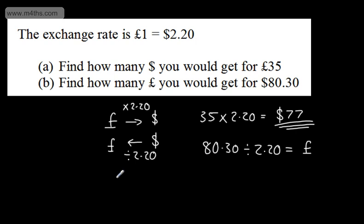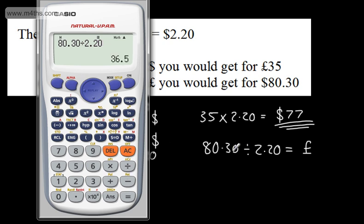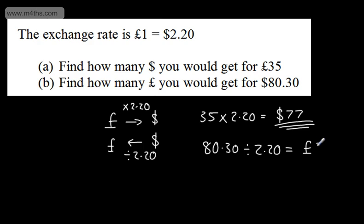So this is going to get smaller. I've got 80.30 divided by 2.20. Let's just put that in, and that gives us £36.50.